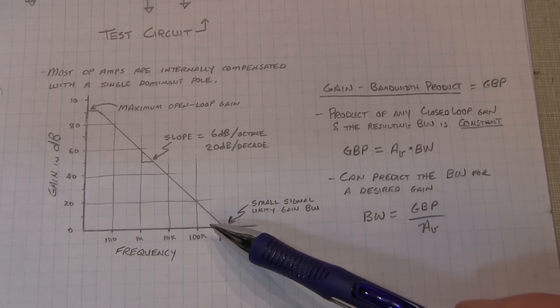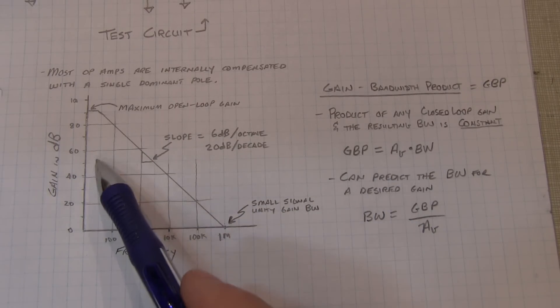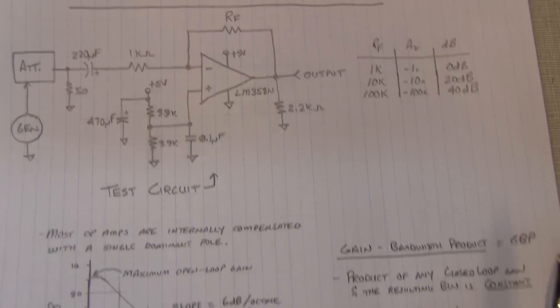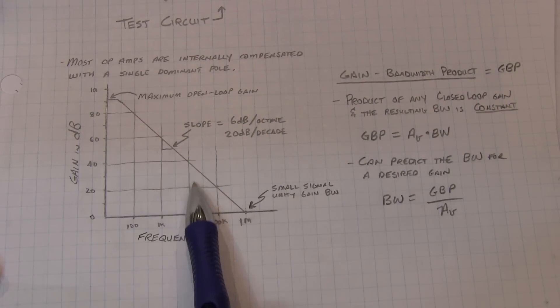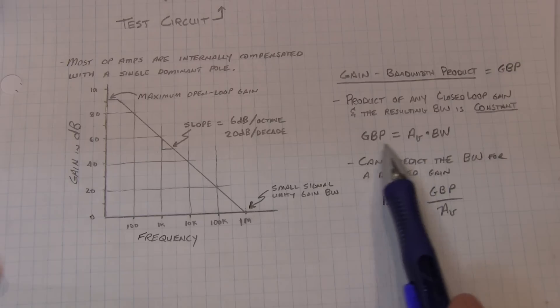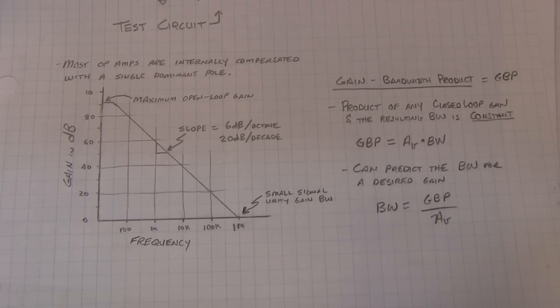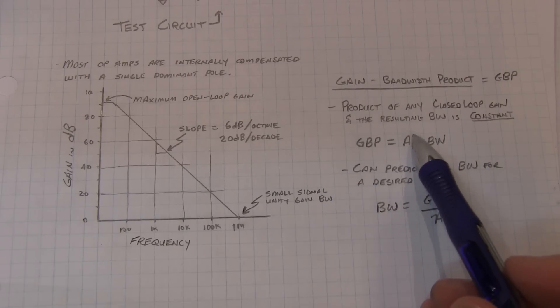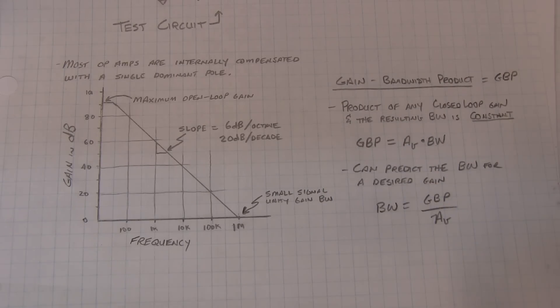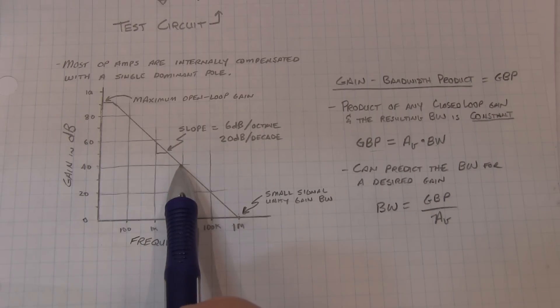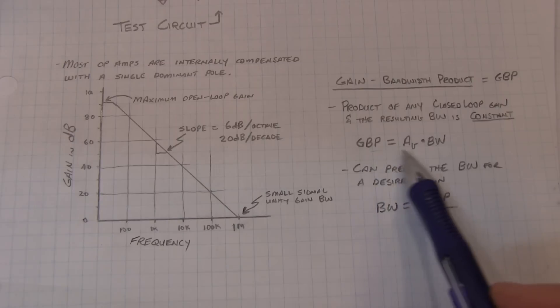This single pole response has a nice property in that the product of the voltage gain that you configure when you set up a closed loop amplifier, the product of that voltage gain and the bandwidth that will result from that amplifier is a constant value called the gain bandwidth product. So for unity gain if AV equals 1, then the bandwidth equals the gain bandwidth product. At other gains, let's say we set up an amplifier with a gain of 10, that would be 20 dB, so 10 times 100 kilohertz would be 1 meg. If we set up a closed loop gain of 100 or 40 dB, then 100 times 10k is also 1 meg.